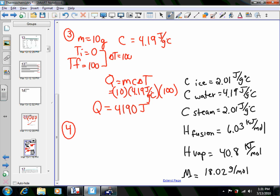Step 4, we still have our number of moles, 0.555 moles of ice. And to change it from water to steam, we use a vaporization molar enthalpy of 40.8 kilojoules per mole.